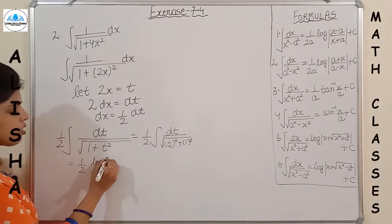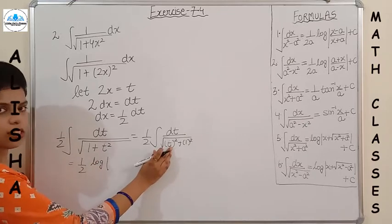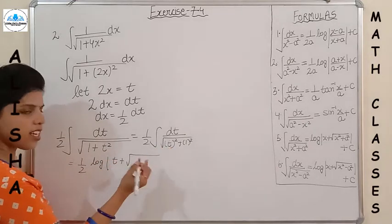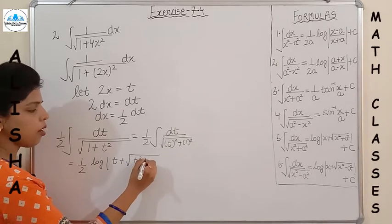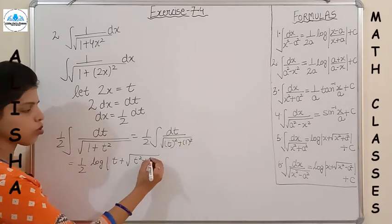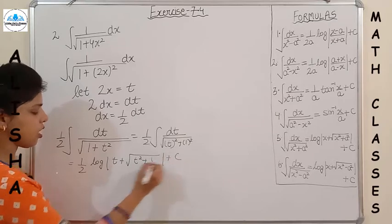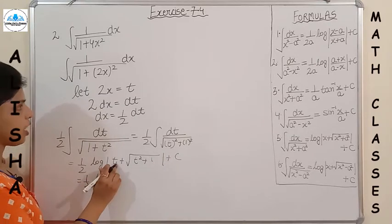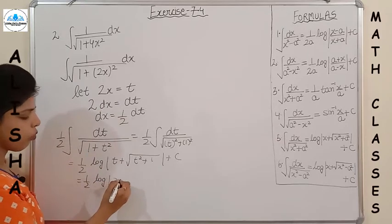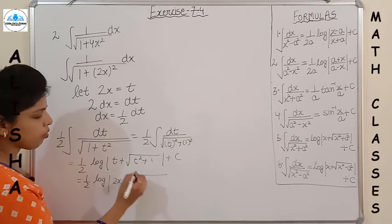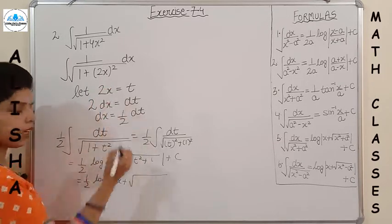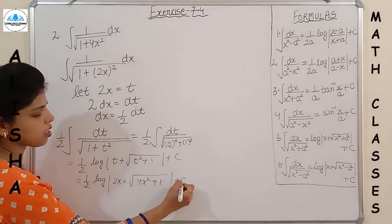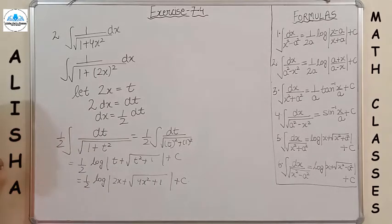Wait — this is actually of the form dx upon √(x² + a²). Using the formula, the answer is log|t + √(t² + 1)| + C. Finally putting back t = 2x, the answer is log|2x + √(4x² + 1)| + C. Please note down.